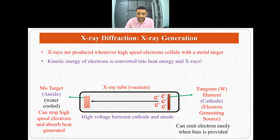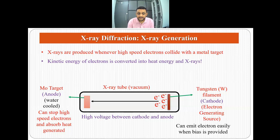In an X-ray tube we have a tungsten filament which is the cathode and our electron-generating source. We have a high voltage between cathode and anode, and the X-ray tube is in vacuum. The electrons move rapidly from the tungsten filament toward the metal target anode, striking it, and the kinetic energy is converted into heat energy and X-rays. A refractory metal is used as the target because it can stop high-speed electrons and absorb the heat generated.